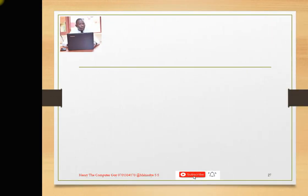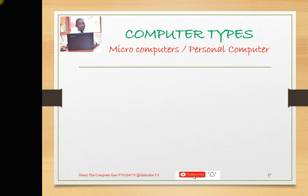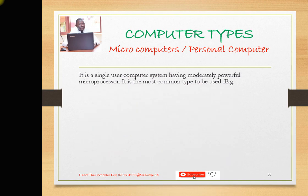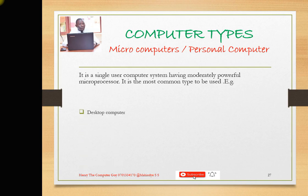Let's begin with the personal computer or microcomputer. They are termed personal computers because they can only be used by one person. It is not all that fast. We can use it for surfing the web, typing documents, opening emails, and playing music. It is a single-user computer system having a moderately powerful microprocessor. It is the most common type of computer being used in day-to-day businesses. Examples include desktop computers and tablet PCs.